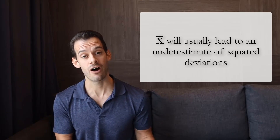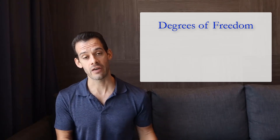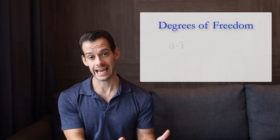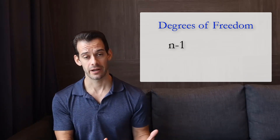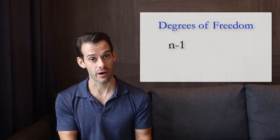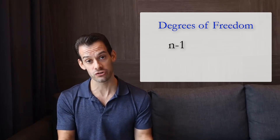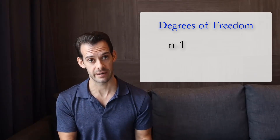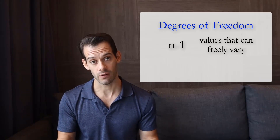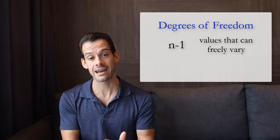We're going to look at two different ways of thinking about this: one based on the idea of degrees of freedom, and another based on trying to estimate the amount of bias that our underestimate will cause. Let's start with degrees of freedom. You might see n-1 referred to as our degrees of freedom, but you might not be sure what that really means. This is related to the idea that if we know x-bar, then we know something about what our sample is composed of. Degrees of freedom are the values that we have that are free to vary — they could be any value at all. And what we see is that if we know x-bar, then not all of the values in our sample are free to vary. Only n-1 of them are.